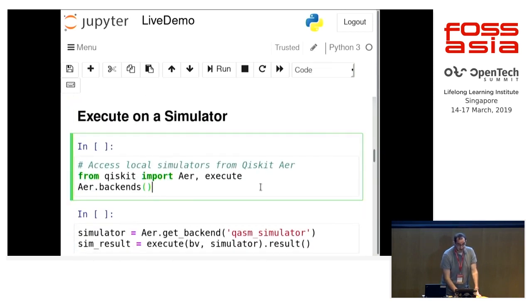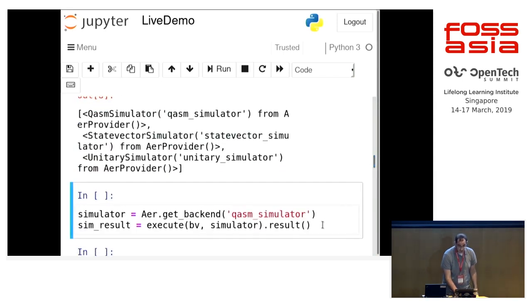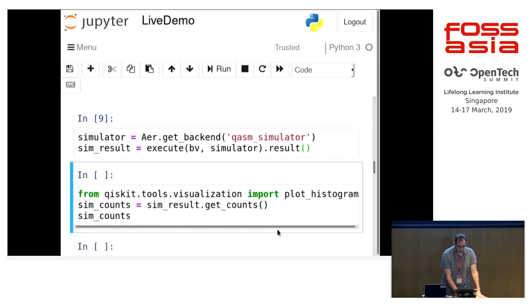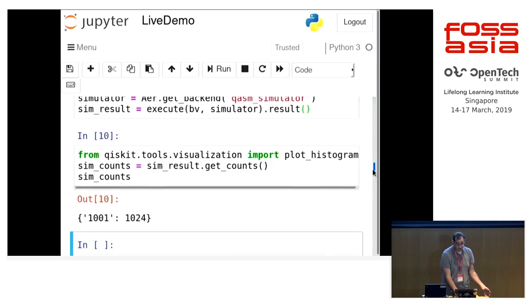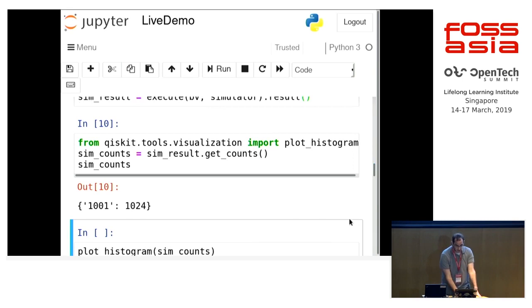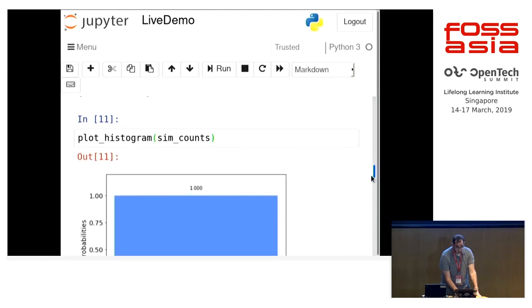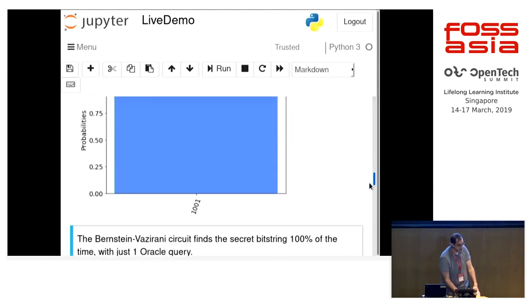We can run this on a simulator real quickly, just to verify because it's a little bit faster. We list all the simulators, pick the one we want. You can read the documentation for what all the different ones do. And we get a result. We can print the result. We can see that we run it 1,024 times, because I said they're probabilistic, and also the real computers are noisy. So you run it multiple times to get the full probability. We run it 1,024 times, and we get our answer all the time, and we can graph that as well. We get 100% of the time, 1,0,0,1.